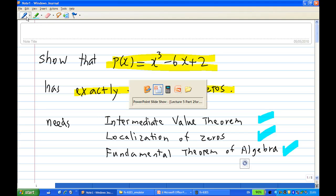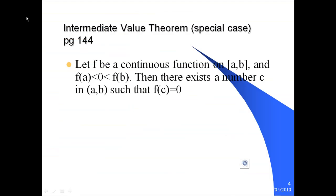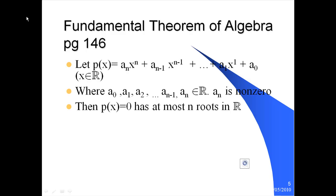To recall the statement of these theorems, let's look at the PowerPoint slide. The Intermediate Value Theorem says that if f is a continuous function on a closed interval from a to b, and f of a is less than zero less than f of b, or f of b less than zero less than f of a, then there is a real number c in the open interval a to b such that f of c is equal to zero.